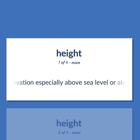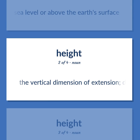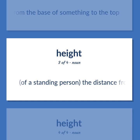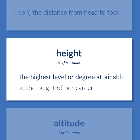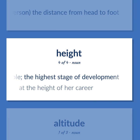Height. Elevation, especially above sea level or above the Earth's surface. The vertical dimension of extension — distance from the base of something to the top. Of a standing person, the distance from head to foot. The highest level or degree attainable; the highest stage of development. Example: At the height of her career.